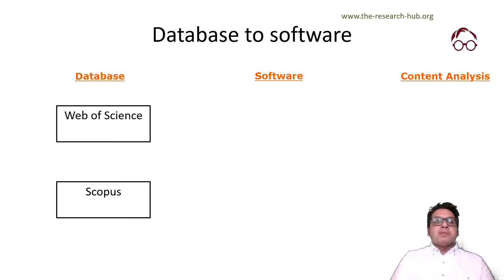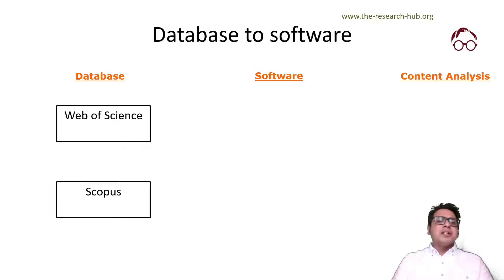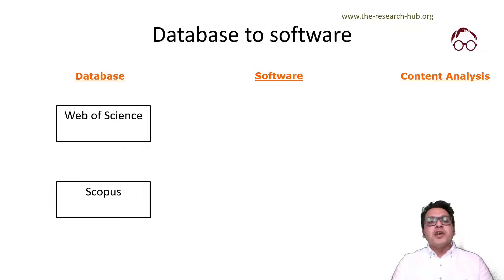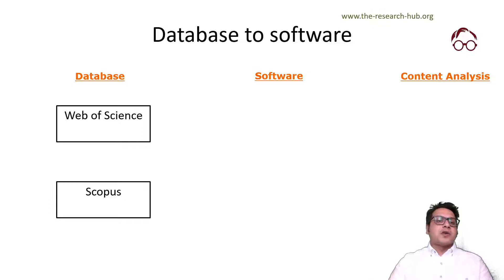In some cases people might not have access to these databases. There are other databases like the Dimensions database, which is also a pretty good database and which is free to use. But normally if you have access to Web of Science and Scopus, you should not go for Dimensions or any other free databases.